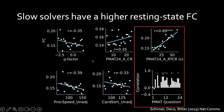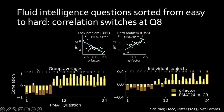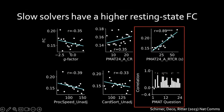We had fMRI data from subjects and computed their functional connectivity — their functional connectomes. This showed that independent of their intelligence, there was a strong correlation between the strength of functional connectivity and the time needed to correctly answer the question, completely independent of question complexity. The questions are sorted from 1 to 24, and previously there was a flip from negative to positive correlation — the more intelligent ones were suddenly slower.